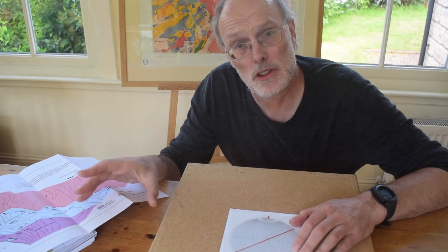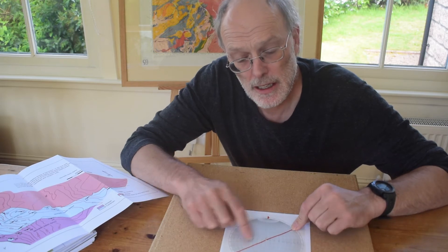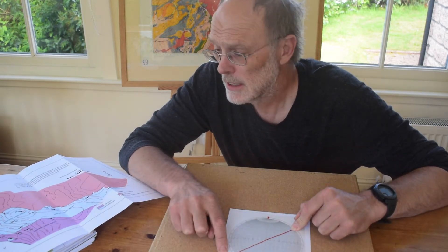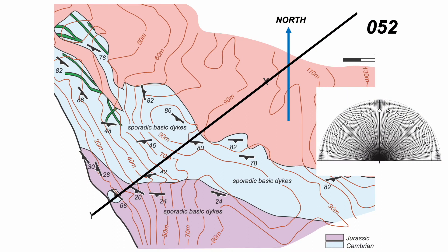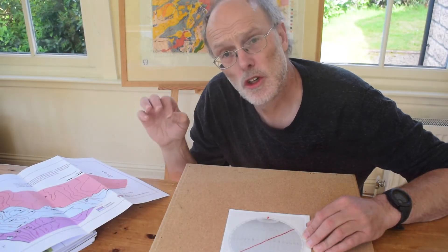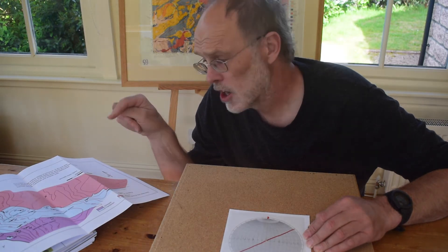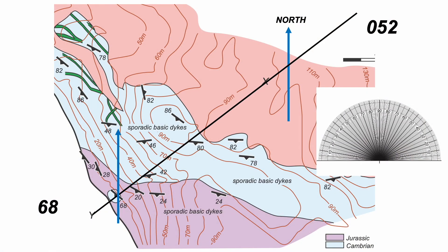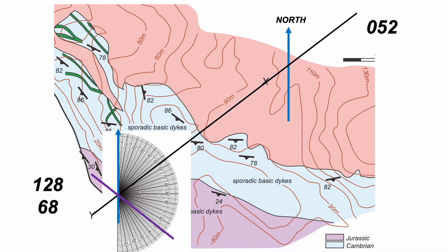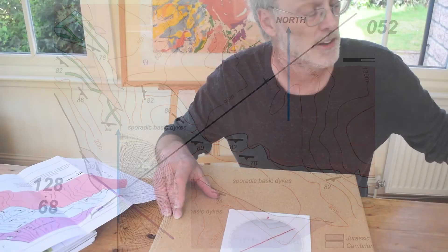Now we need to plot a bedding plane from the map as a great circle on the stereonet and find its apparent dip in the plane of the cross-section. Taking the first reading down towards Y, the dip symbol tells us the dip is 68 degrees. The map doesn't record strikes, so we measure the strike as a bearing from north. Adding a protractor, we find the strike is 128 and the dip is 68.